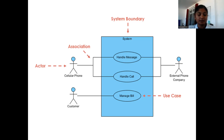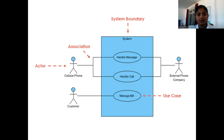We don't need to expect all use cases to be connected with all actors, but if an actor exists, it must be connected with some use cases. Any actor that does not interact with any use case should be neglected. To summarize, the use case diagram is a type of UML diagram mainly used for understanding and representing customer requirements, and for identifying what events will be covered in the software. Thank you for listening.